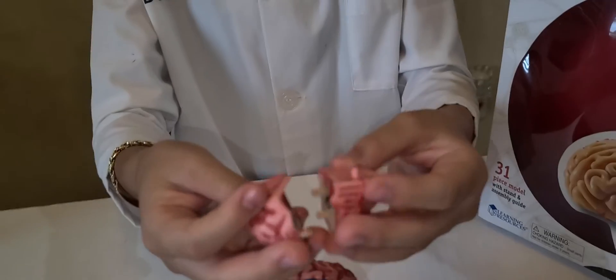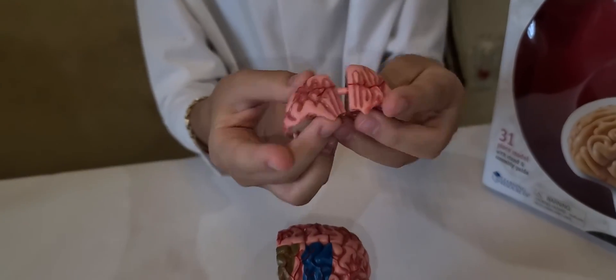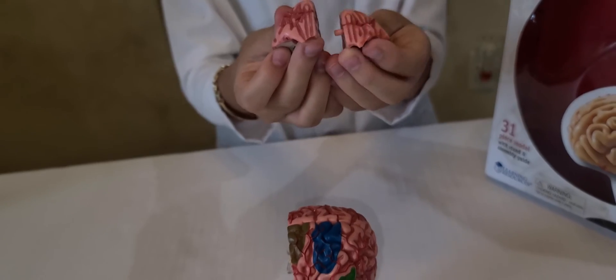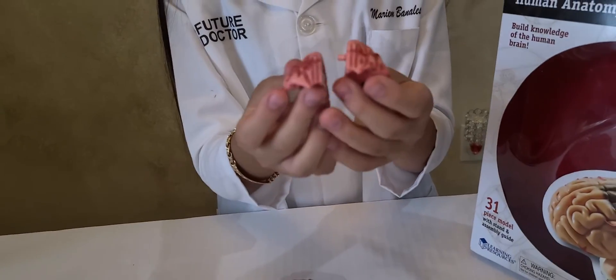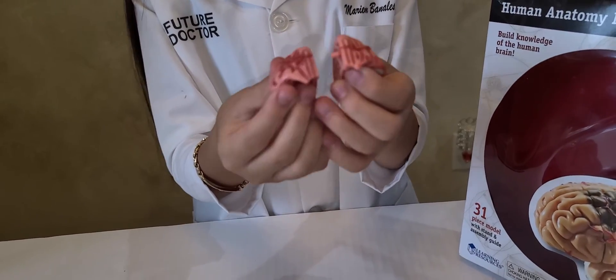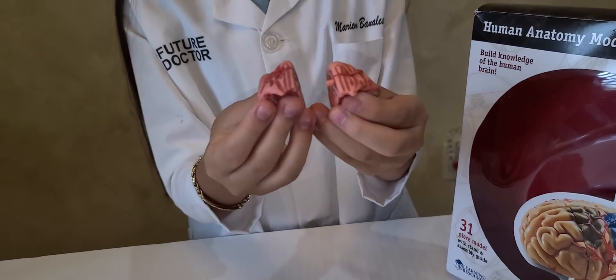Then the last and final two pieces are called the frontal lobe and the frontal lobe controls many functions including movement, memory, language, social behavior, problem solving, decision making, emotion and personality.